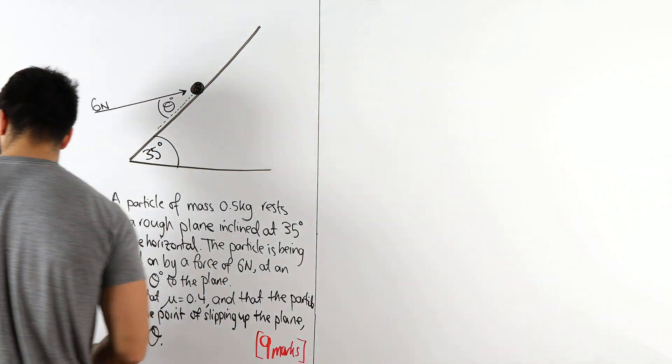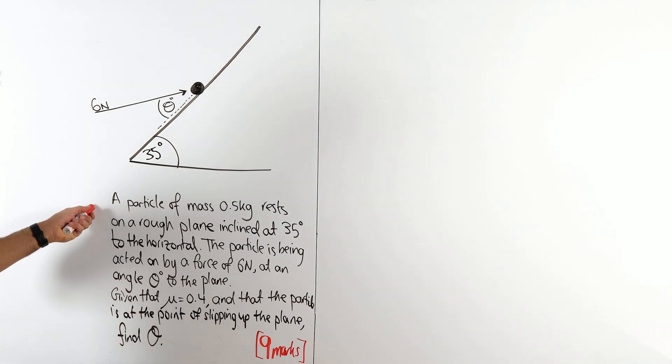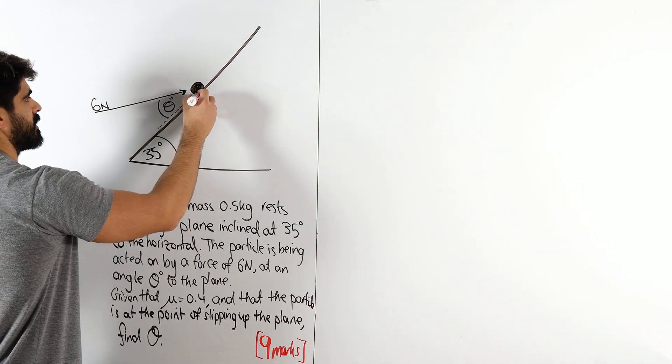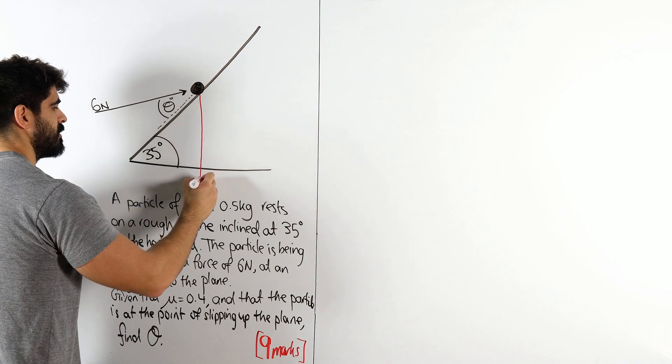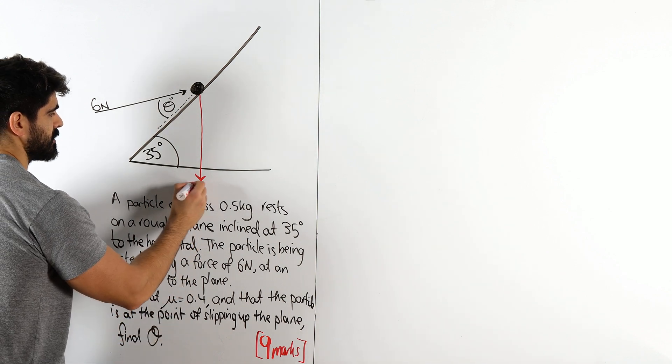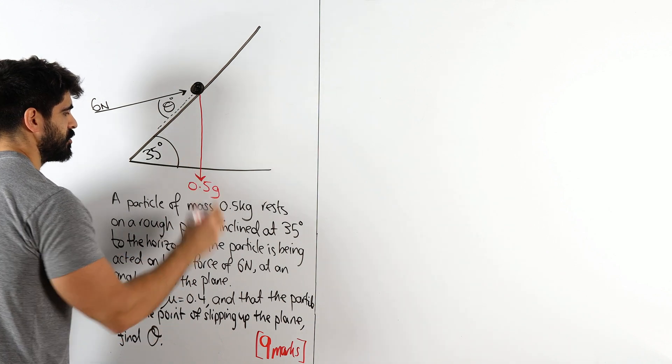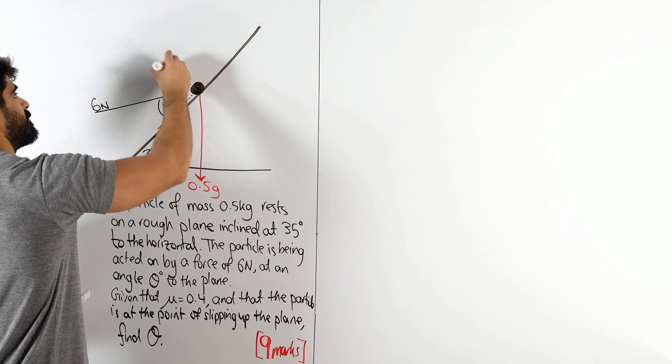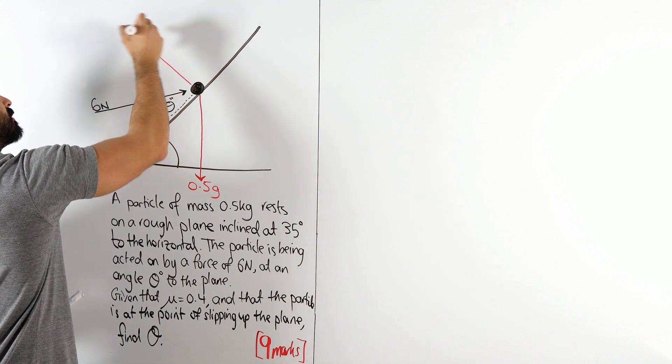So what we got here, a particle of mass 0.5 kg. The first thing we're going to start doing is adding our forces. I'll do this in a different color. Now when you do these, draw the lines very long. So 0.5 kg means the force is 0.5g. If it's resting on the plane, there is going to be a reaction force, R.